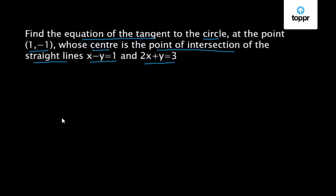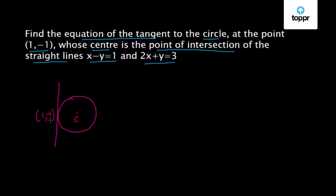So let us try to solve this problem. First of all, let us draw the situation given in the problem. Here's a circle whose centre, let us say, is C, and a tangent to it is at a point (1, -1) — let us say this is point P. Now this centre C lies at the point of intersection of the straight lines x minus y equal to 1 and 2x plus y equal to 3.